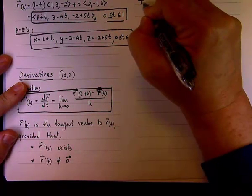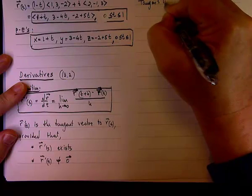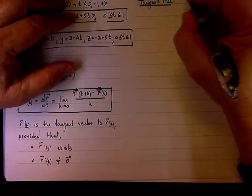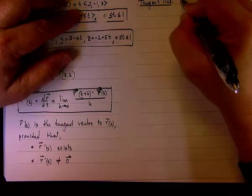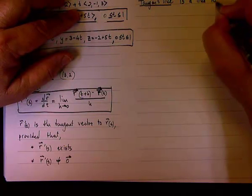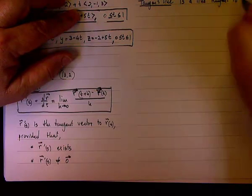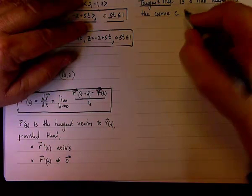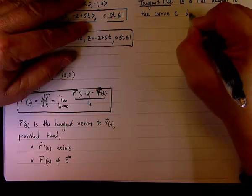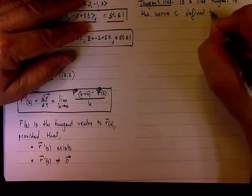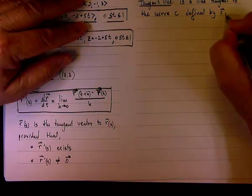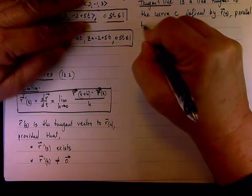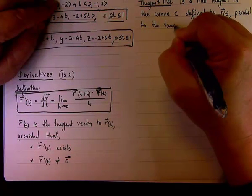The tangent line, not the tangent vector, but tangent line, is a line parallel to the tangent vector. So it's a line tangent to the curve C that is defined by the vector r, and the line is parallel to the tangent vector.